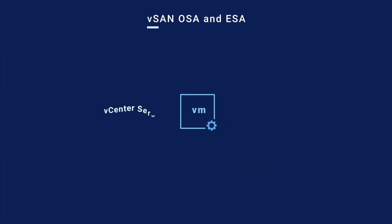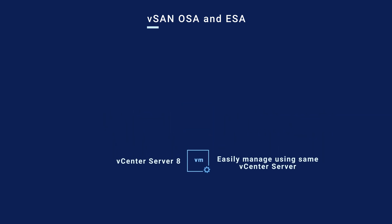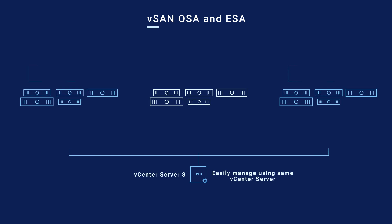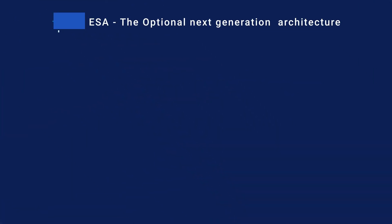ESA-based clusters use vSAN 8 and require vCenter 8 for management. These new ESA clusters can easily be managed from the same vCenter server as existing or new OSA clusters. Let's take a closer look at the new architecture.